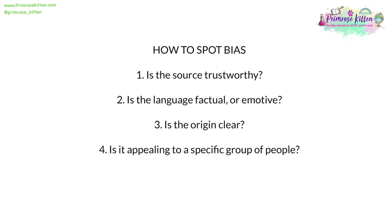So to conclude, how can we spot bias? There are four questions we can ask. First, is the source trustworthy? Has this come from a source you can trust, or a less reliable one? Second, is language factual? Is it using precise, factual, neutral, unemotive language, or is it using emotive language to build up anger? Third, is the origin clear? Is it clear who has written this and where the funding has come from? Fourth, is it appealing to a specific group of people — the elderly, a particular racial group, or people angry about immigration? By asking these questions, you can determine if a source is likely biased.